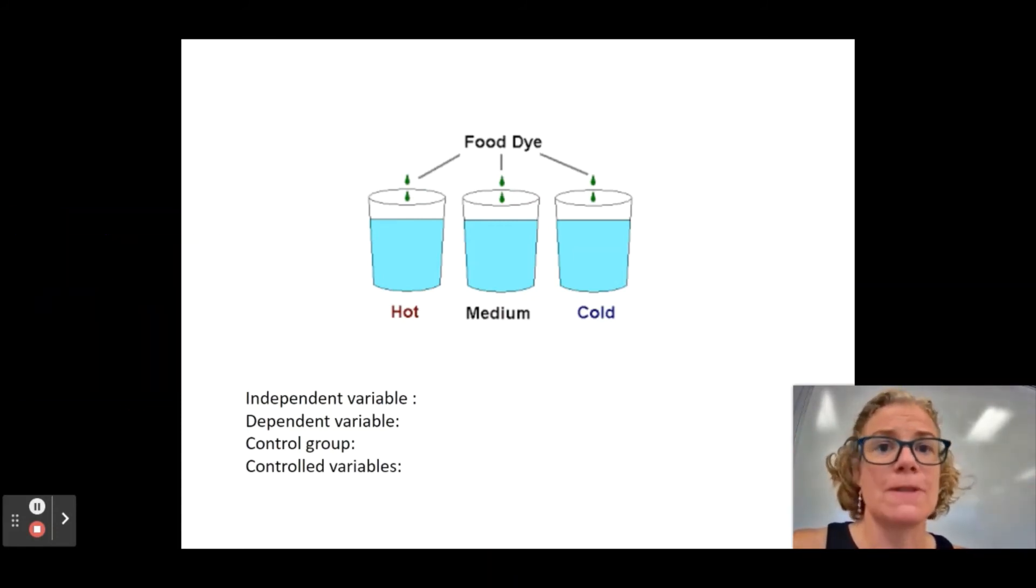Controlled variables. Same amount of water. Same amount of dye. You probably want the distance that you're dropping this from to be the same. You probably want to make sure that the water, like, has been sitting for the same amount of time. Because if it, like, if I just move that cup, it's going to be kind of, like, stirring a little bit internally.